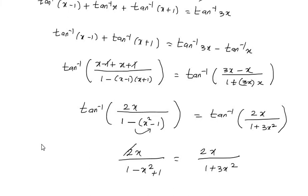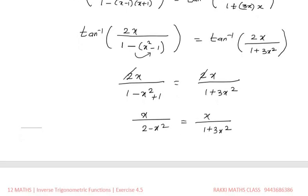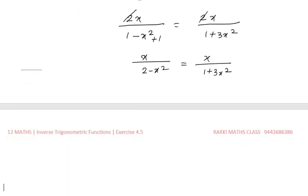Since tan inverse appears on both sides, we remove it. Then we cancel x from both sides — noting x is not equal to zero for the cancellation step — giving: 1 divided by (2 minus x squared) equals 1 divided by (1 plus 3x squared). Cross-multiplying: x times (1 plus 3x squared) equals x times (2 minus x squared).